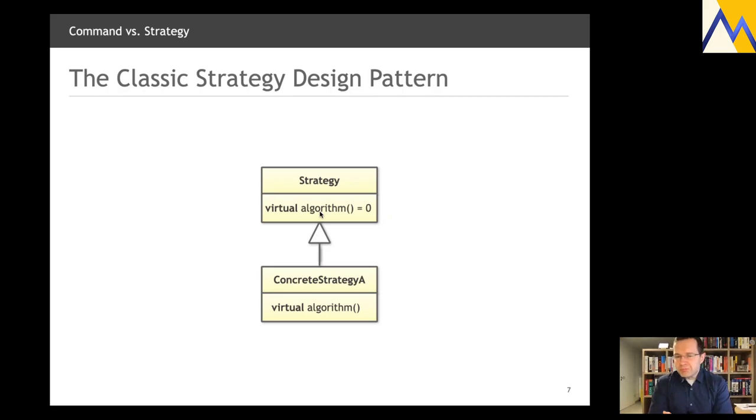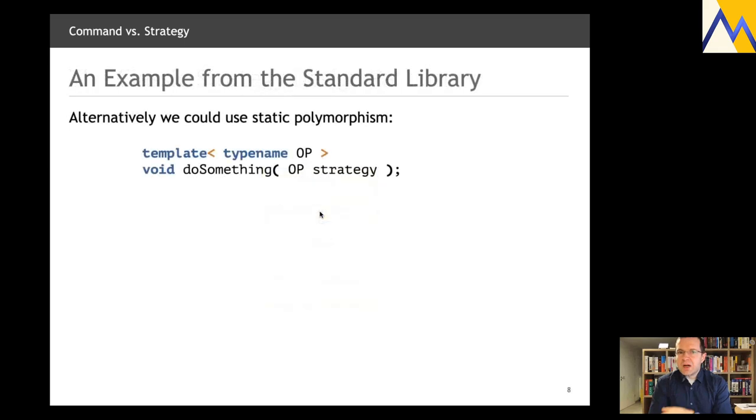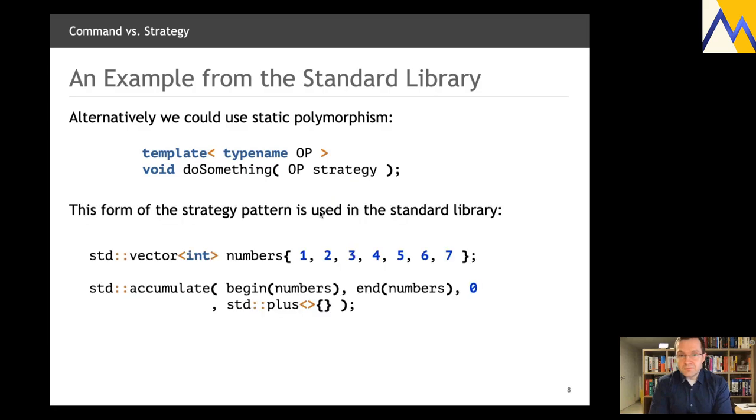However, you could also use some kind of static polymorphism here, like an algorithm that takes some operation, some strategy. And again, an example is, for instance, from an algorithm from the standard library, like Accumulate. Accumulate takes a beginning iterator, an end iterator, and a strategy, what it needs to do.